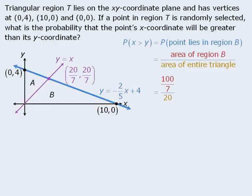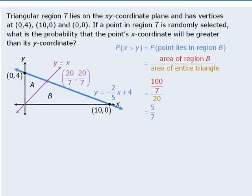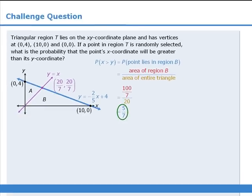At this point, we're almost done. When we simplify 100 sevenths over 20, we get 5 sevenths, so our probability is 5 sevenths.